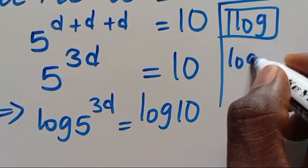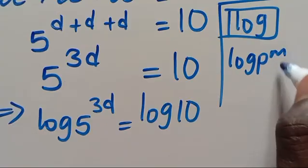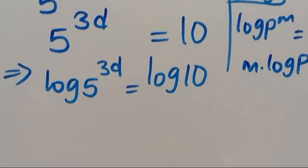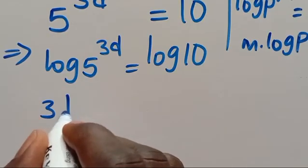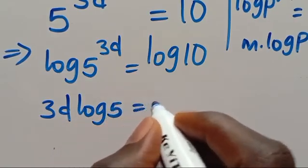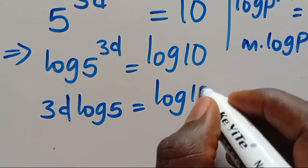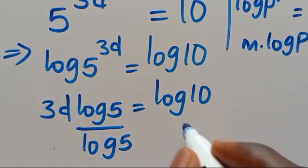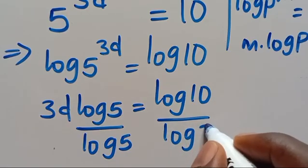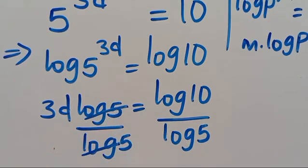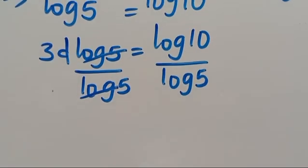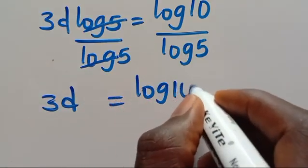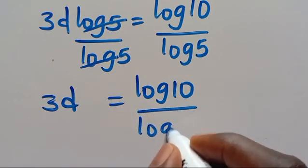Recall that when we have log P to the power of M, this power M will come down to give us M multiplied by log P. So from here we have 3D equals log 10 divided by log 5.